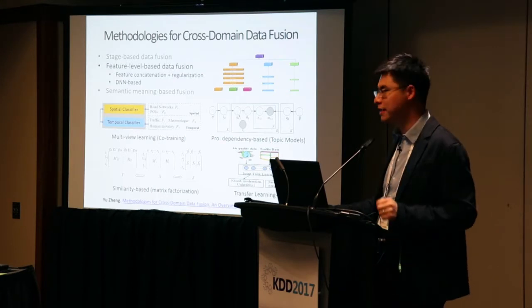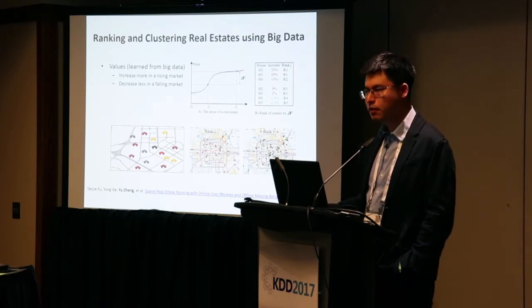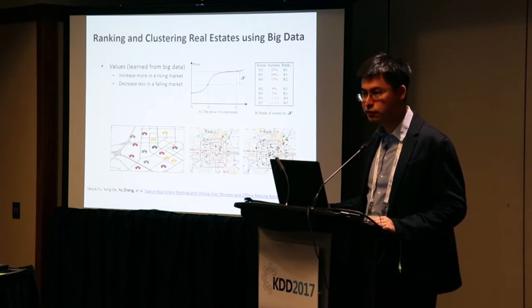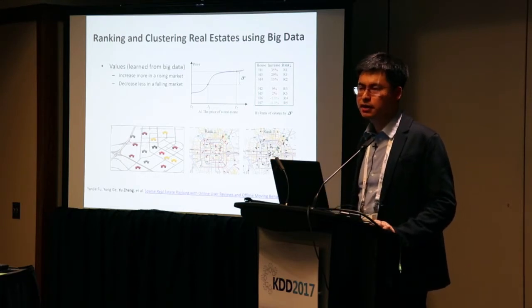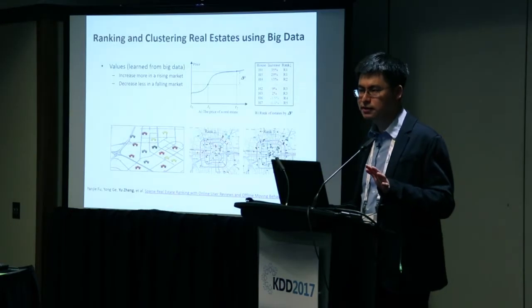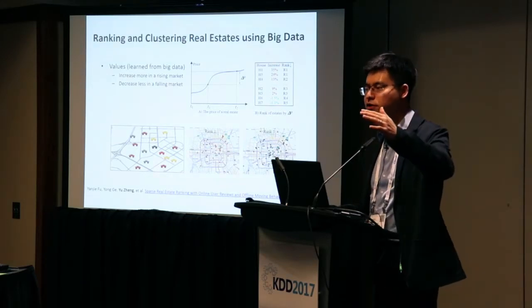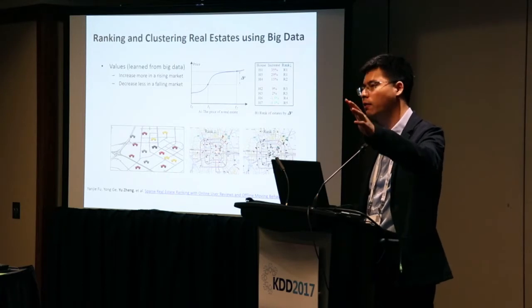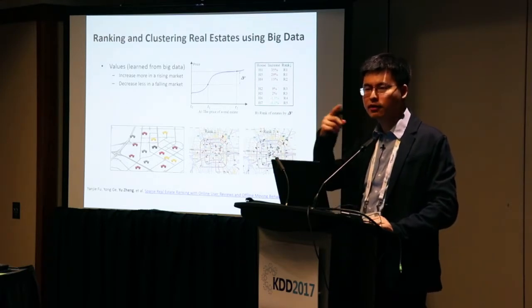Here I use one example about ranking real estate. People want to buy real estate with high value. Rather than predicting the price — which is very hard, particularly in China — we predict the relative ranking of real estate. Given the same market, which real estate increases in price faster than others, or decreases slower? That relative ranking we can compute.